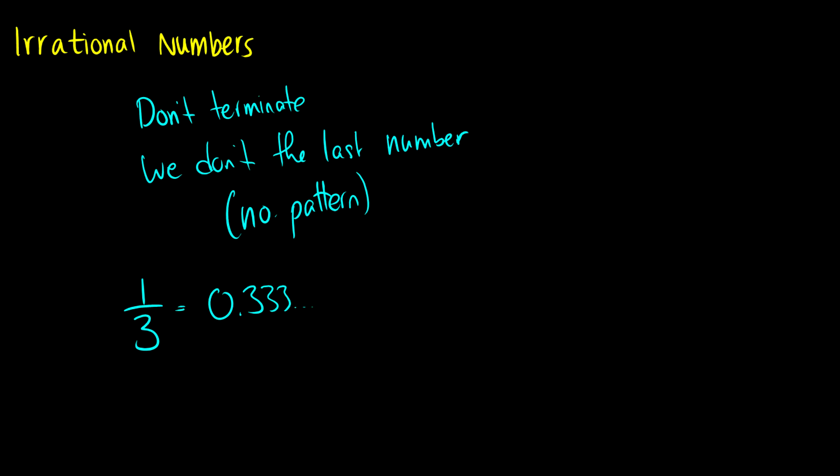But for instance, if we're given a number pi, which we know is 3.14159, so on and so forth, I can go on for like 25 digits or something. That's as far as I know. But we don't know what the last number is.